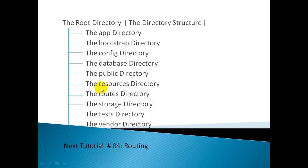Then the resource directory. This directory contains the views as well as the raw uncompiled assets such as Less, Sass, or JavaScript. Then comes the routes directory, which contains all of the route definitions for the application. Then comes the storage directory, which contains our compiled Blade templates, file-based sessions, file caches, and other files generated by the framework. Then the test directory, which contains the automated tests. And then the vendor directory, which contains the Composer dependencies.